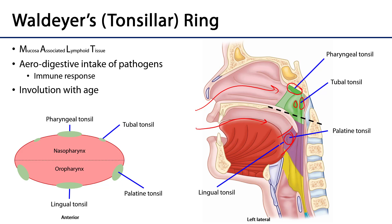The palatine tonsils are what people commonly refer to as 'the tonsils,' and they are the targets of tonsillectomy. These palatine tonsils tend to involute after puberty.